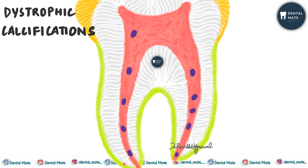If we talk about the etiological agents for dystrophic calcification, it could be dental caries, crack tooth syndrome, trauma to the pulp, bacteremia which releases endotoxins, septicemia, periodontal pockets, chemical irritation of the pulp, thermal changes, galvanic shock, etc. This dystrophic calcification is seen more commonly in the root canal, that is the radicular pulp.